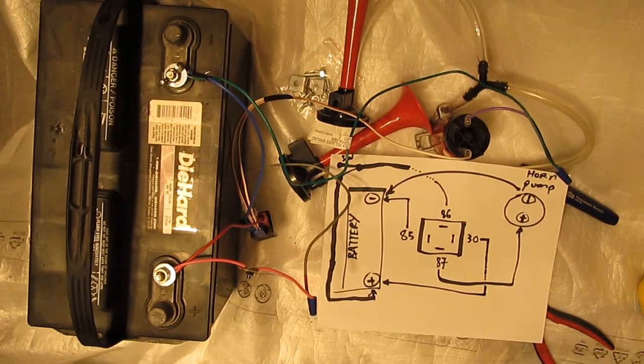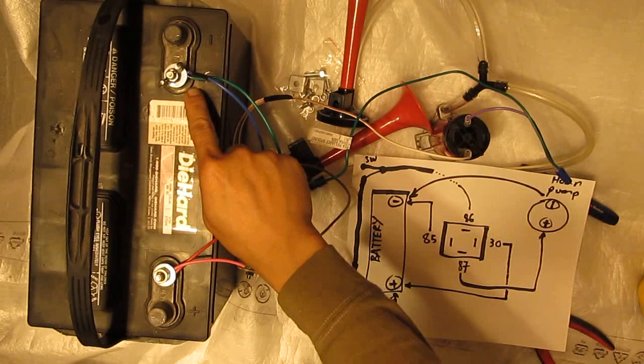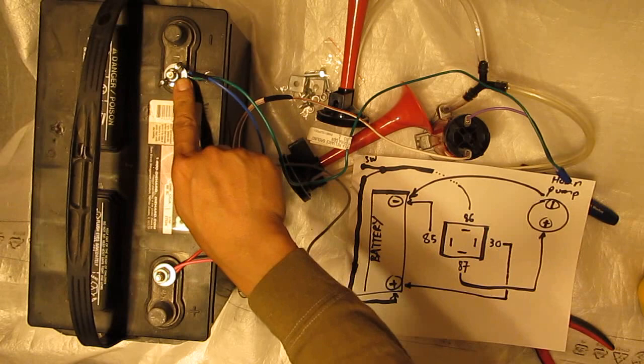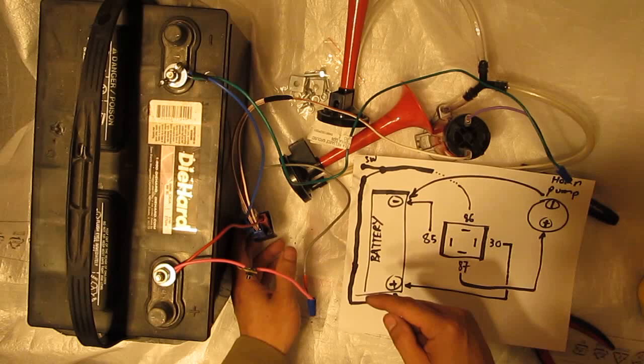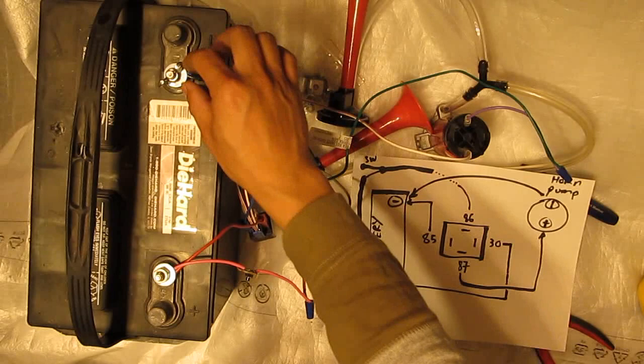Alright, so I got a diagram here to show you again how I wired everything together. And for the ground, for the negative, there are two wires that go to the negative of the battery, the negative of the pump and the negative of the relay, which is pin 85 on the relay. And you don't have to put it to the negative end of the battery.